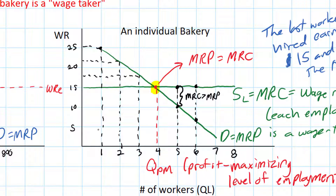Notice that for every worker from zero to four, going back to our first worker here, the marginal revenue product is greater than the MRC. In other words, the firm earned profits by hiring those workers, and that's true all the way up to the fourth worker.